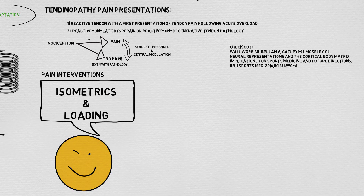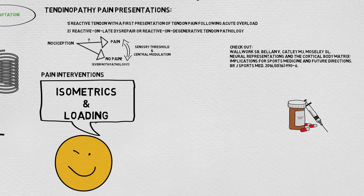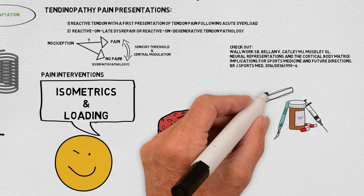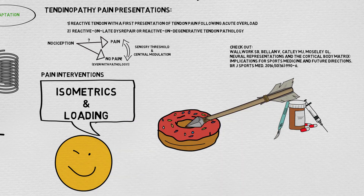They finally discuss whether there is a particular way we should treat based on the structure of the tendon as described within the continuum. They emphasise that since their original continuum paper, it's clearer that the degenerative portion has no capacity to change. Additionally, they note evidence showing the remaining tendon can compensate for areas of loss by increasing cross-sectional area to have the needed capacity. So the tendinopathy continuum model is helpful, but their phrase of 'treating the donut, not the hole' is a very important closing statement.